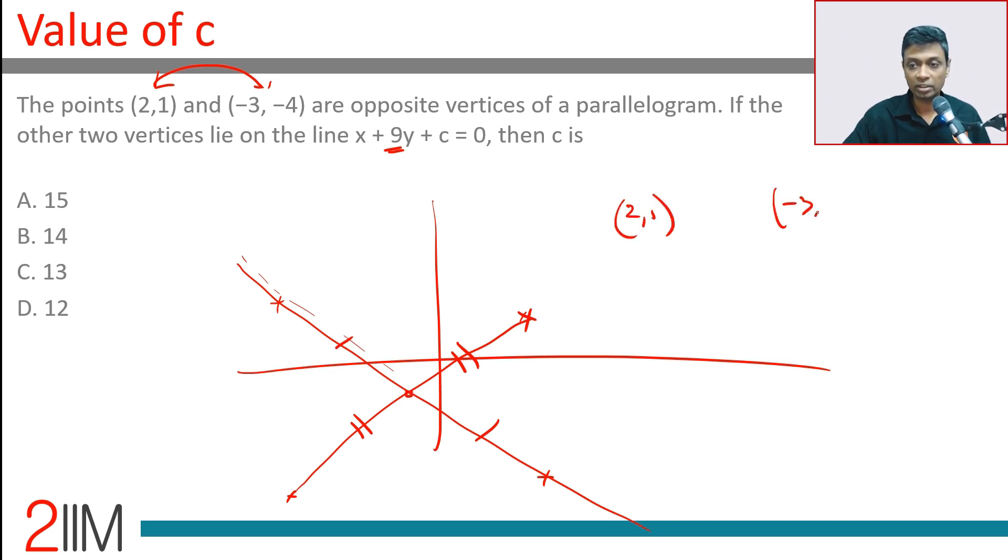So midpoint of 2 comma 1 and minus 3 comma minus 4: 2 minus 3 by 2, 1 minus 4 by 2 equals minus half, minus 3 by 2. We put x equal to minus half, y equal to minus 3 by 2. This should be satisfied.